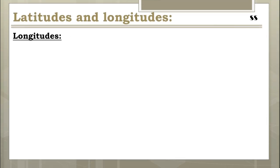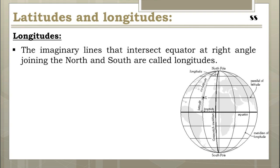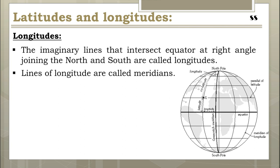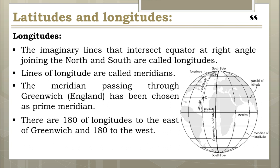Now let's know about longitudes. The imaginary lines that intersect the equator at right angles, joining the north and south poles, are called longitudes. On the globe, longitudes are shown as a series of semicircles that run from pole to pole passing through the equator. All lines of longitude are of equal length. Lines of longitude are called meridians because all places along the same meridian experience noon or midday at the same time. The meridian passing through Greenwich has been chosen as the prime meridian, marked as zero degrees longitude.